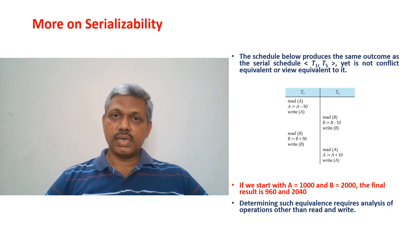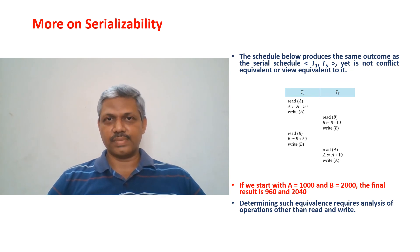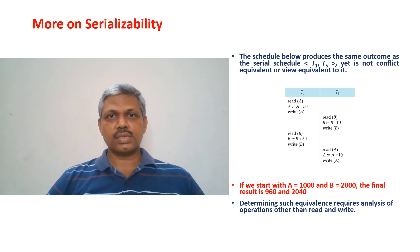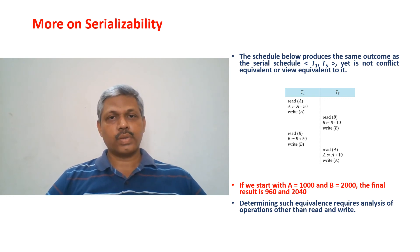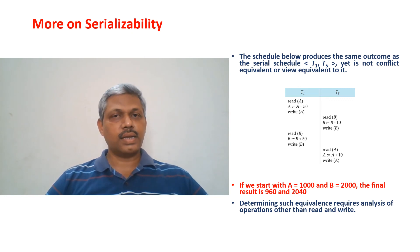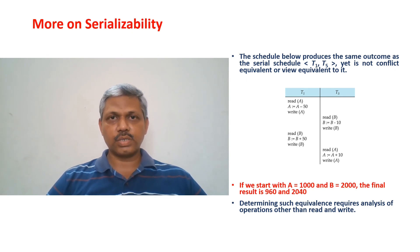However, importantly, consistency is not lost with respect to the serial schedule T1-T5. Whatever the serial schedule T1-T5 produces, this schedule also produces the same result. So this schedule is equivalent to a serial schedule, but it is neither view serializable nor conflict serializable. The essence of this is: even though a given schedule is not view serializable or conflict serializable, it may still be serializable — there may still be a possibility of serializability in the given schedule.